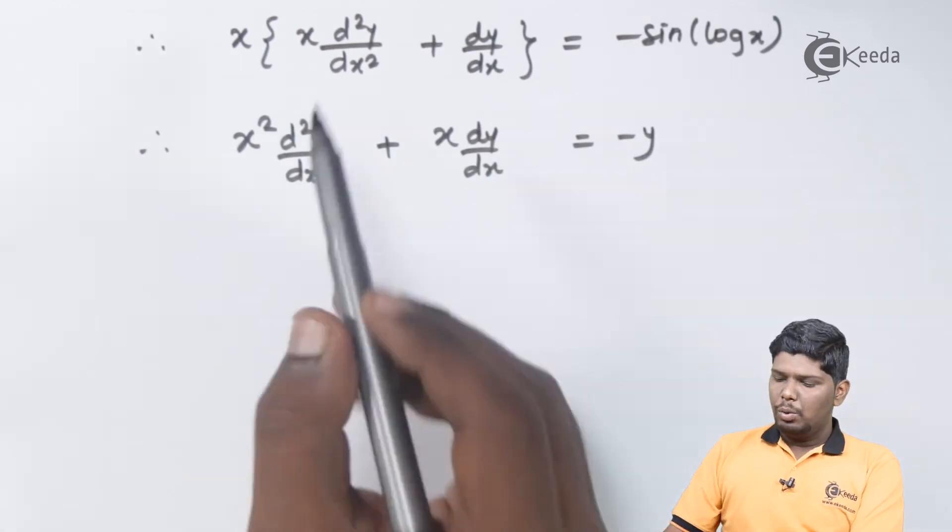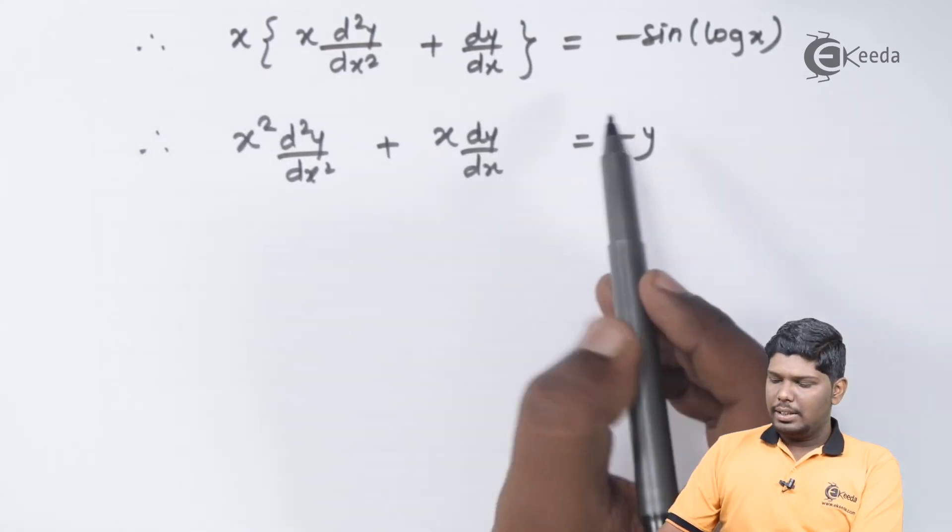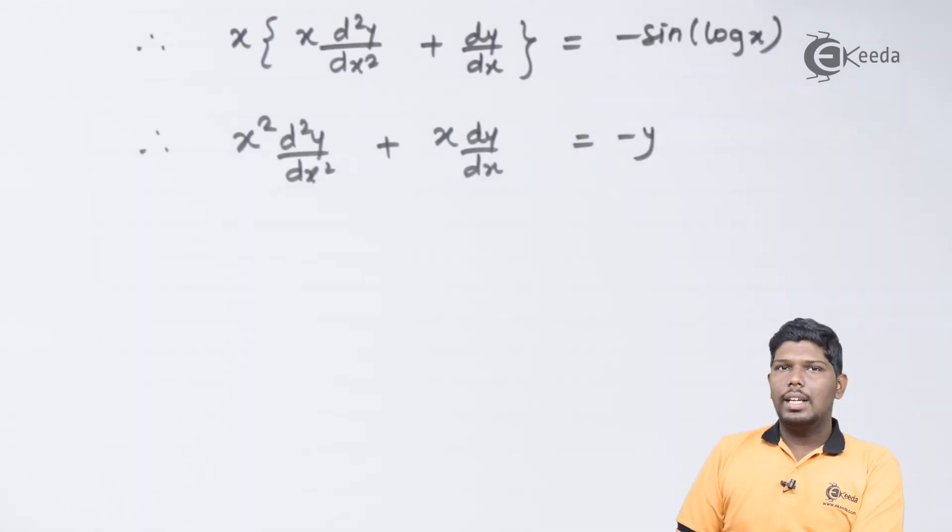This will give you x into x as x square d2y by dx square plus x dy by dx is equal to minus, as it is sin of log x is nothing but y.